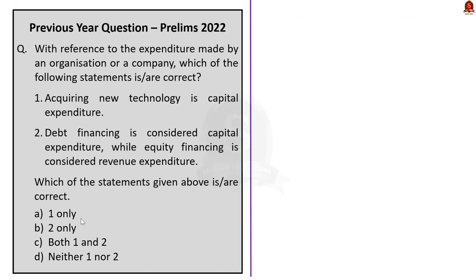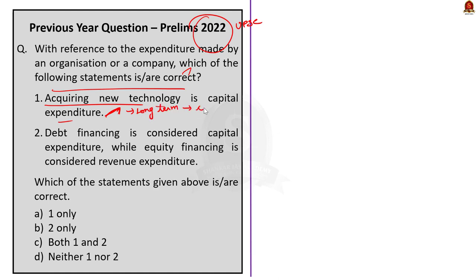The third question from UPSC 2022 prelims asks about capital expenditure. Statement 1 — acquiring new technology is capital expenditure — is correct, as it creates assets and generates future profit. Statement 2 — debt financing is capital expenditure while equity financing is revenue expenditure — is incorrect, as both debt and equity financing come under capital expenditure. The answer is option A, statement 1 only.